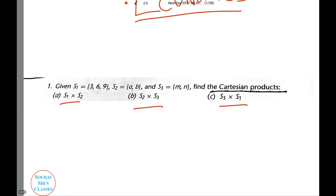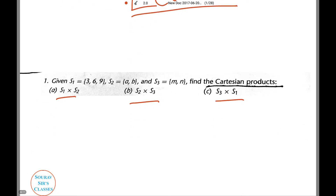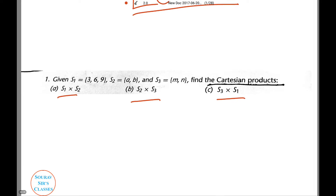We are going to start off with a sum on Cartesian products. We have three cases: A, B, and C. We are given a set S1 of {3, 6, 9}, S2 of {A, B}, and S3 with {M, N}.